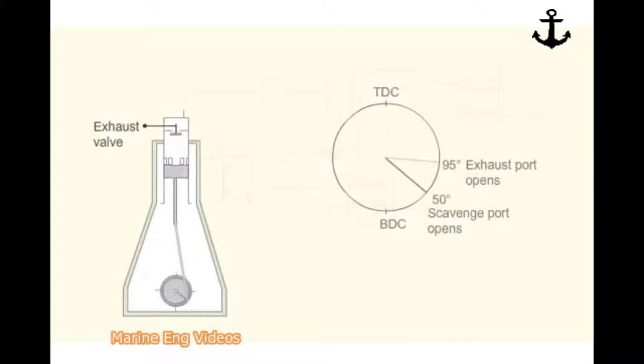When the crank is about 50 degrees before the bottom dead center, the scavenge ports begin to open. They are closed when the crank is about 50 degrees past the bottom dead center. The exhaust valve closes about 70 degrees past the bottom dead center.